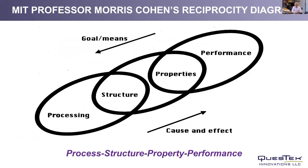Typically the materials industry works left to right: starting from existing process and chemistry, recognizing microstructure, setting properties, then designing performance. We rely on the reverse — the reciprocity principle by Professor Cohen at MIT — starting with the required performance, determining what properties are needed, what microstructure achieves those properties, and how it fits within the client's processing parameters.